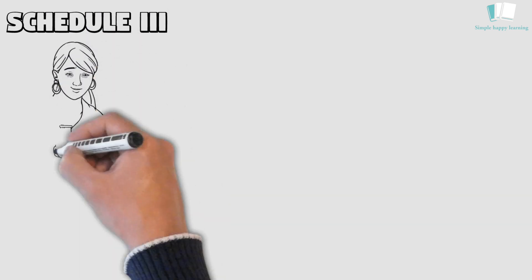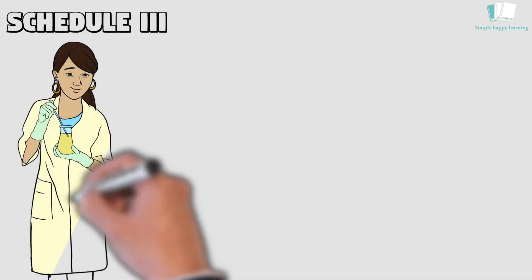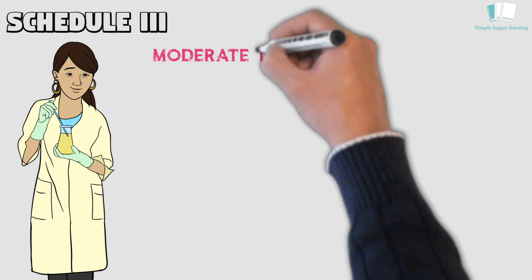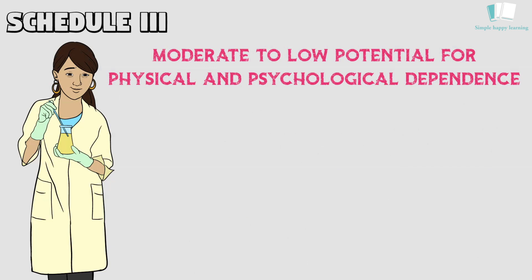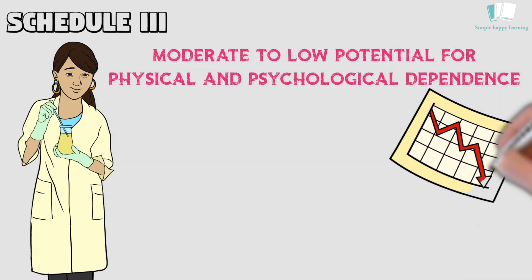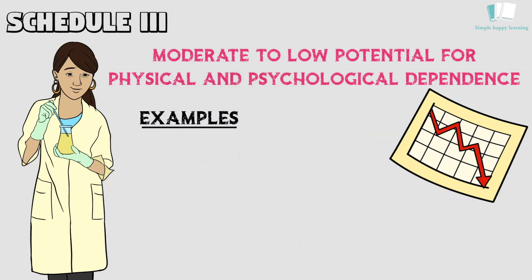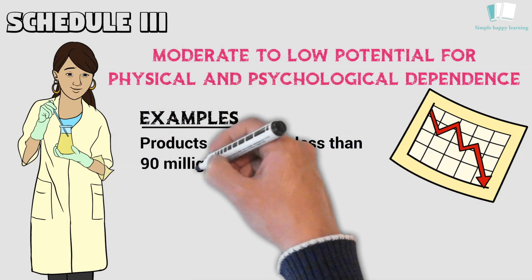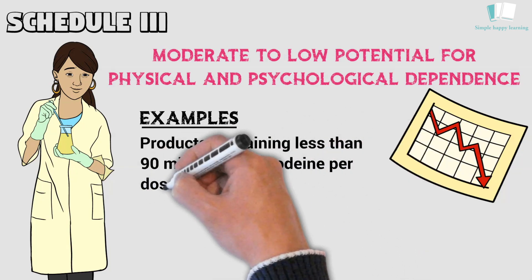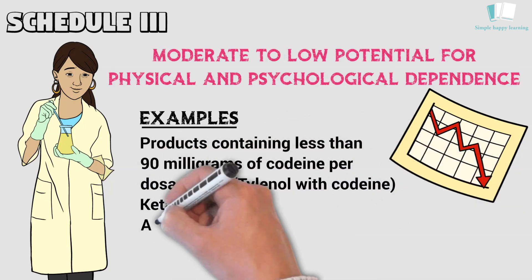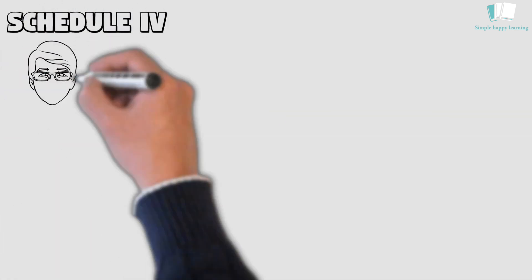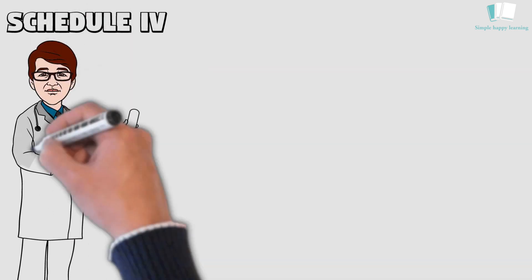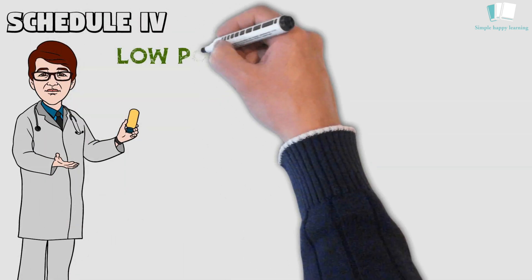Schedule 3: Schedule 3 drugs, substances, or chemicals are defined as drugs with a moderate to low potential for physical and psychological dependence. Schedule 3 drugs' abuse potential is less than Schedule 1 and Schedule 2 drugs but more than Schedule 4. Some examples of Schedule 3 drugs are products containing less than 90 milligrams of codeine per dosage unit (Tylenol with codeine), ketamine, anabolic steroids, and testosterone.